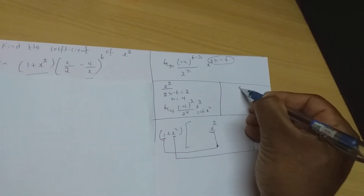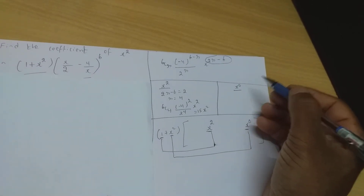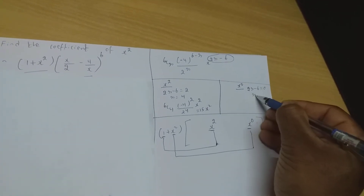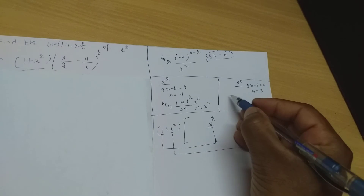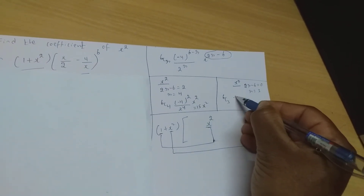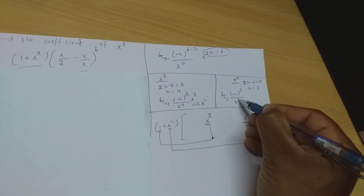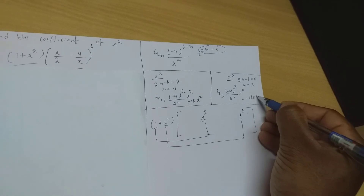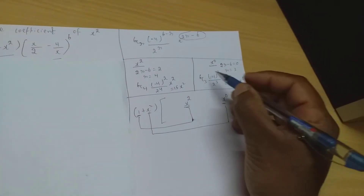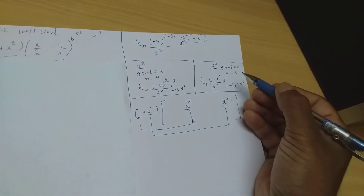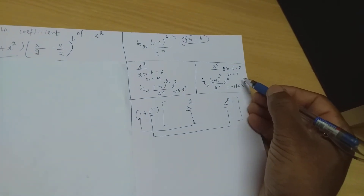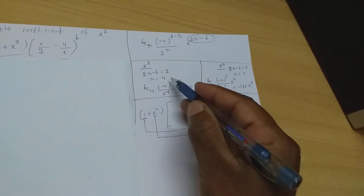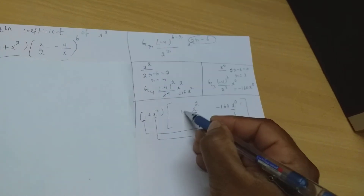To get x⁰: set 2r − 6 = 0, so r = 3. Substituting r = 3: 6C3 · (−4)^3 / 2^3 = 20 × (−64)/8 = −160. So the coefficient of x⁰ is −160. For different values of r you get different coefficients.